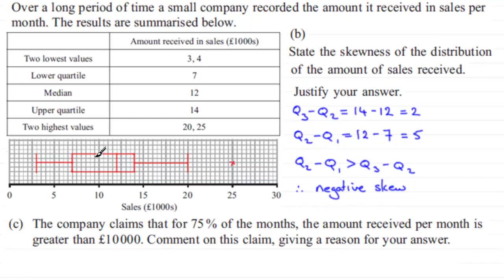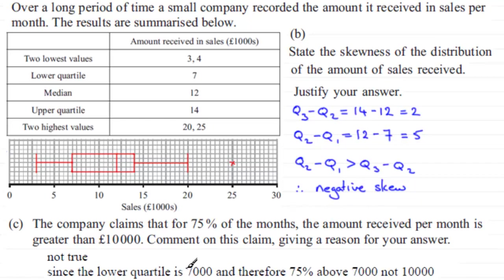£10,000 is within the box, so the claim would only be true if our value were at the lower quartile boundary — but it's not. Therefore, the claim is not true since the lower quartile is £7,000, meaning 75% of sales are above £7,000, not £10,000.